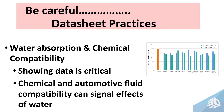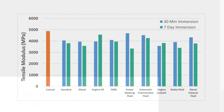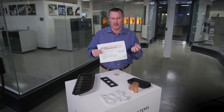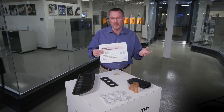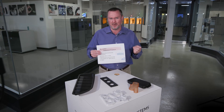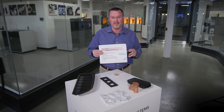Another resource for understanding water absorption is chemical compatibility or automotive fluid compatibility charts, where you can look at things like automatic transmission fluid and how it affects a part's mechanical properties. Typically when you have chemical compatibility data, distilled water will be included so you can look at more than just mass uptake — hopefully you can see how exposure affects your mechanical properties. This is really important to know for your design and application.